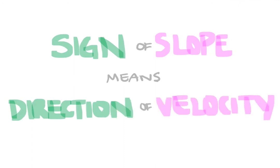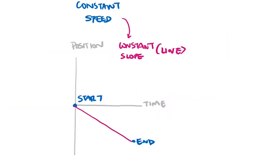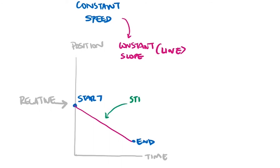Do the position values have to be negative for the fox to move backwards? Not at all. Our starting position doesn't have to be at the origin of the graph. Since position is relative, we can move the zero position around and the motion would be the same. When the slope is negative, the object is moving backwards regardless of where it is on the position axis.